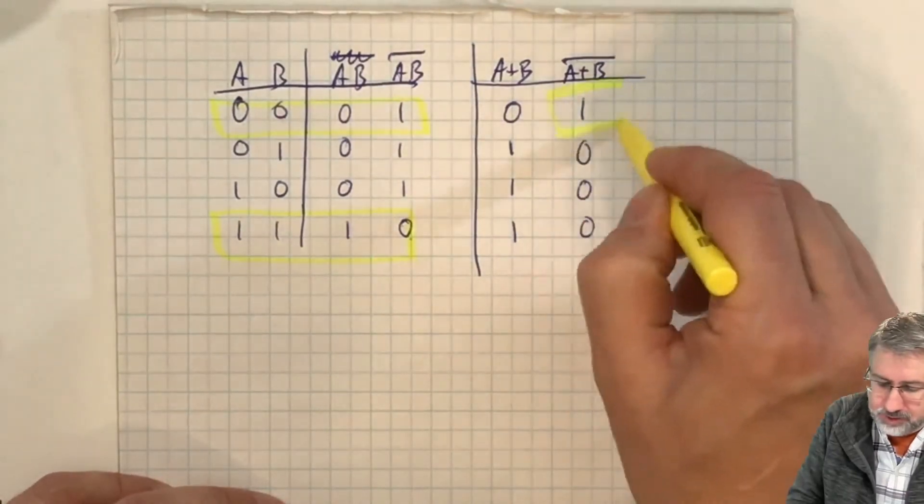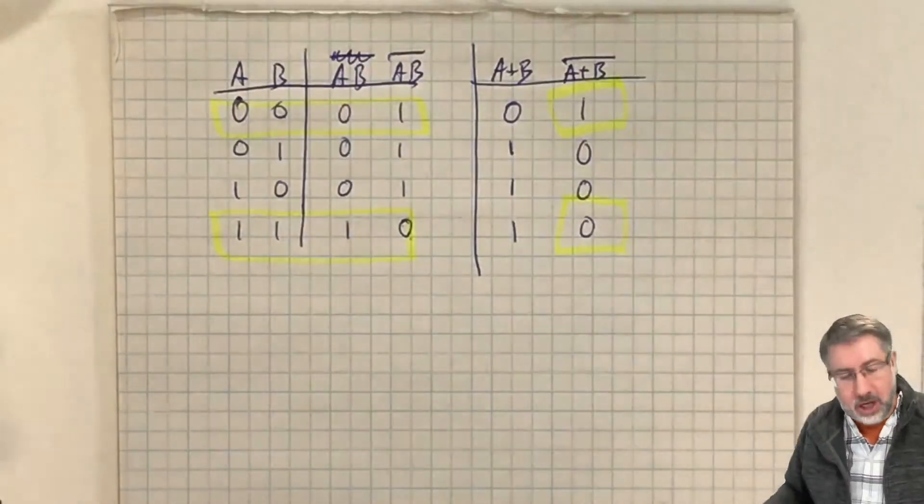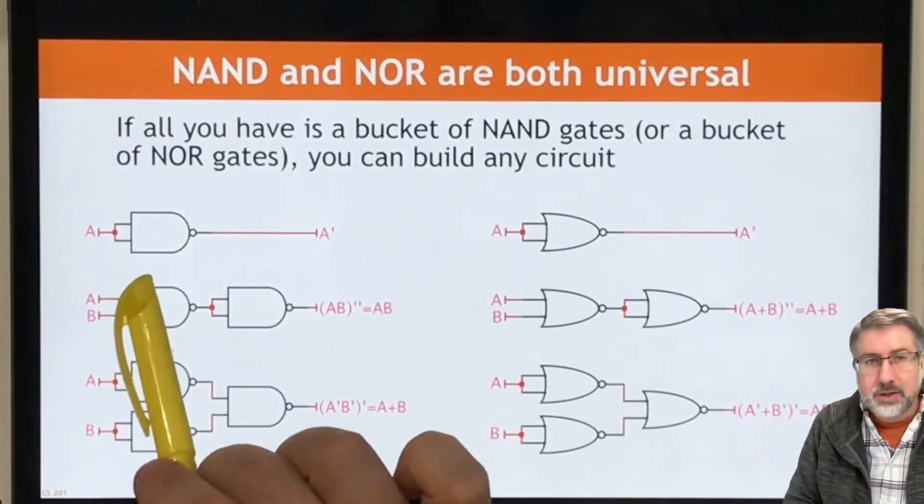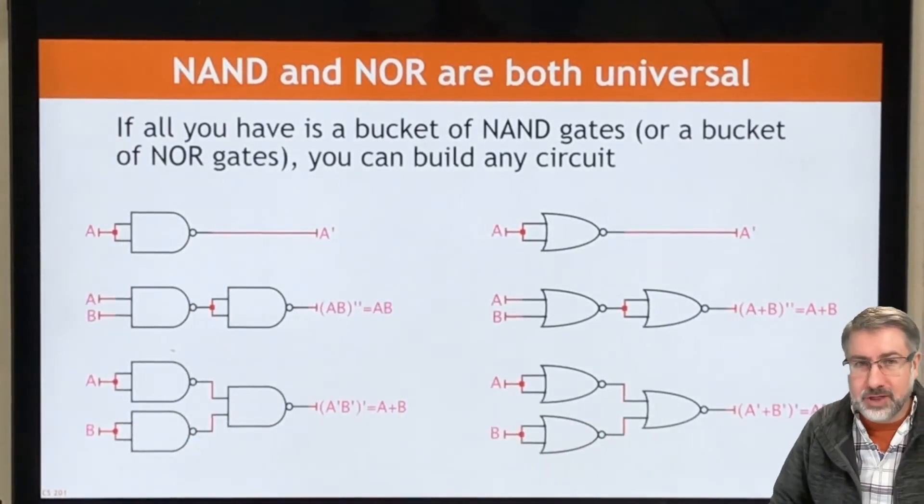And the same with the OR gate. If the inputs are the same, then the output is the opposite of that input. That's what we mean when we have this tying together of the inputs, and the result is the inverse of the output.